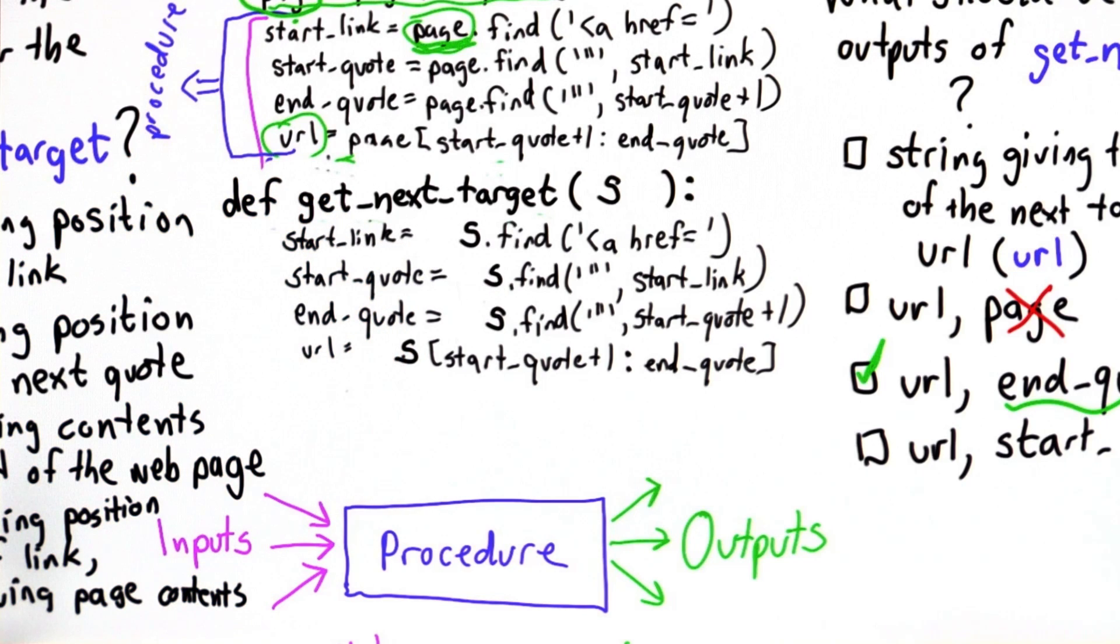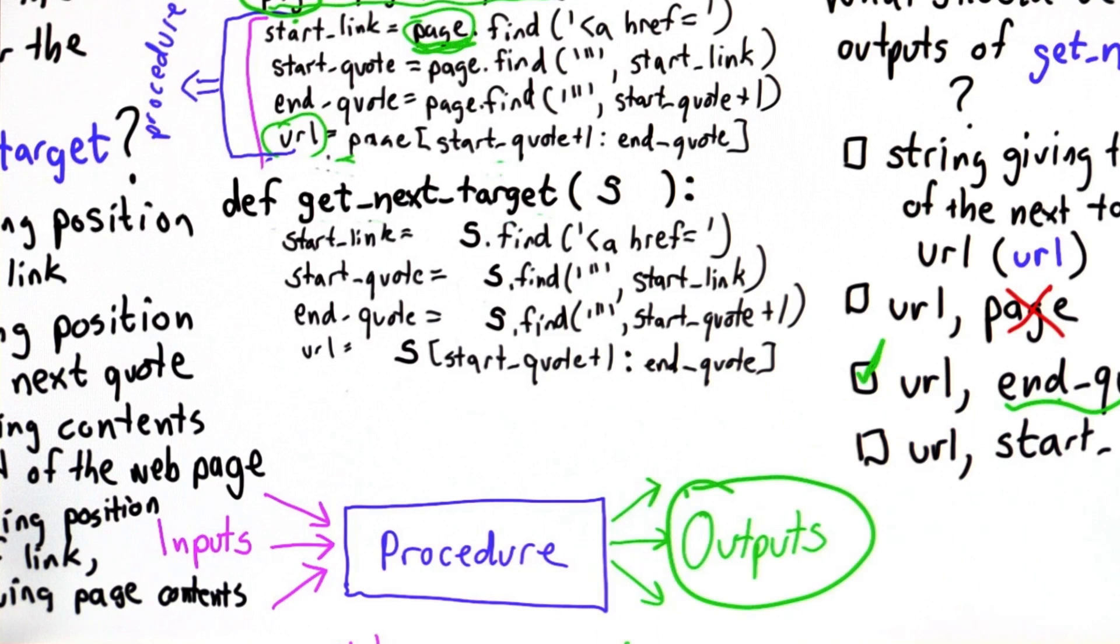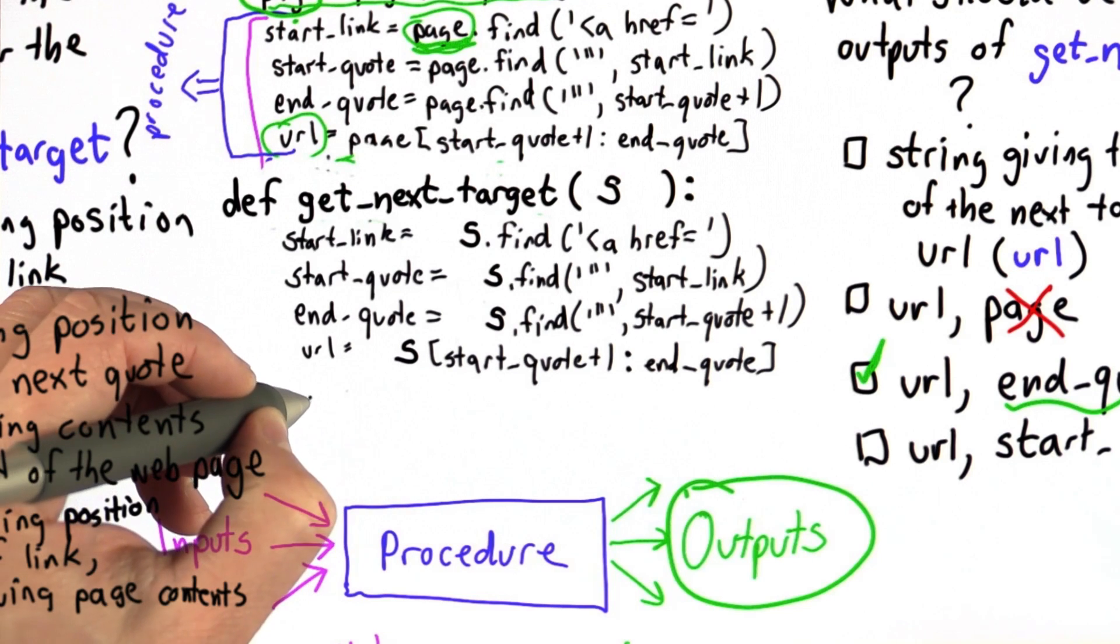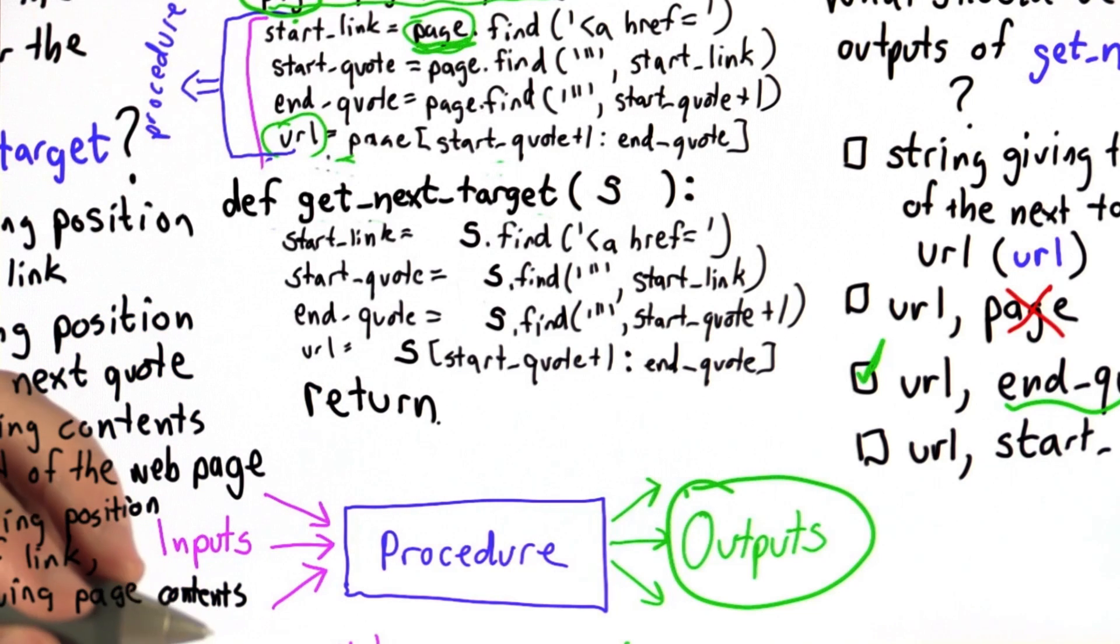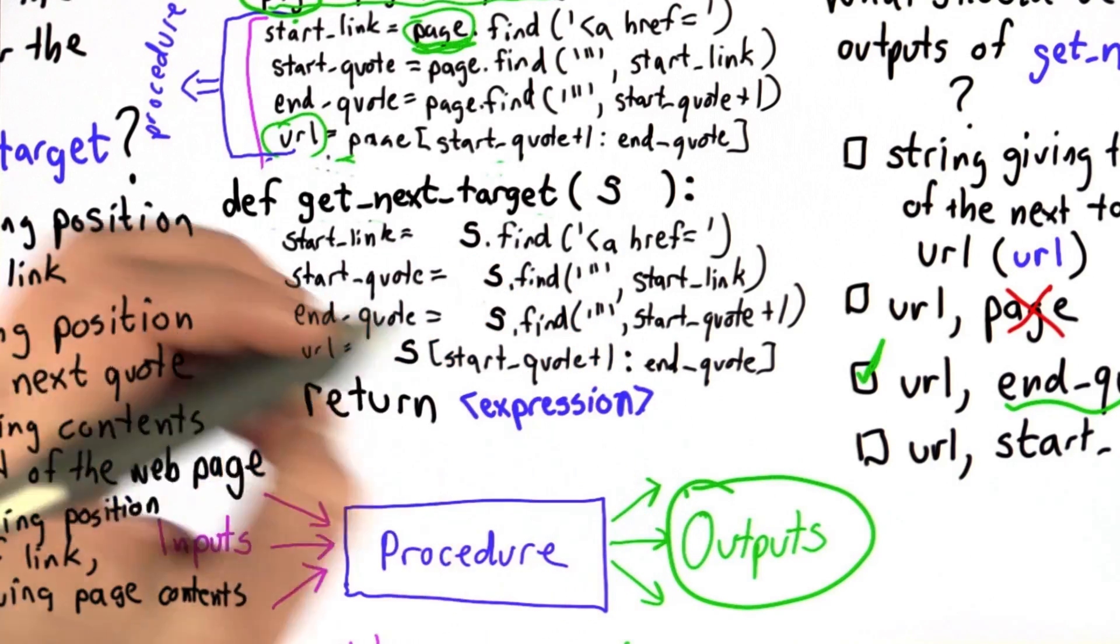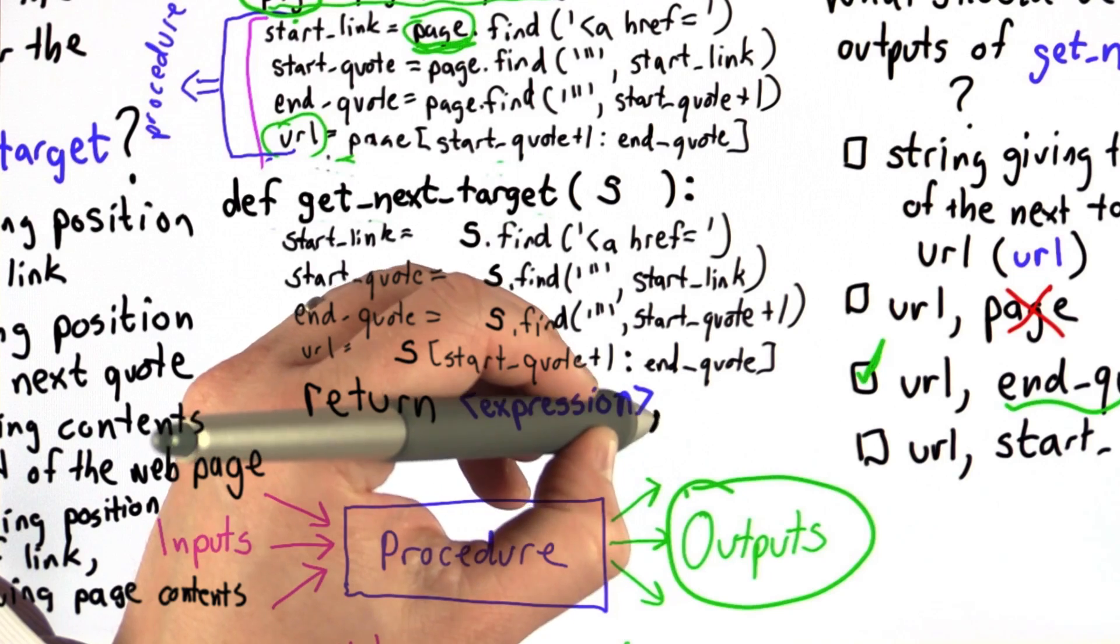So we're almost done. There's one big thing we have left to do. And that's how do we get the outputs, right? We said what we want the outputs to be is the URL and the value of end quote. We need some way of getting those back. And the way to do that is to use return. Return's a special construct in Python. So we have the keyword return, followed by a list of all the things that we want to return from the procedure. So what we return is a list of any number of expressions, separated by commas.